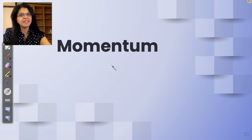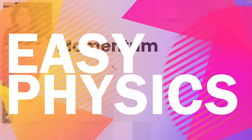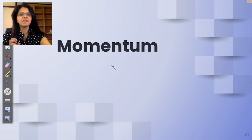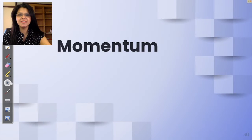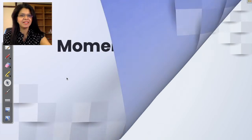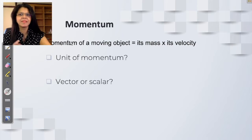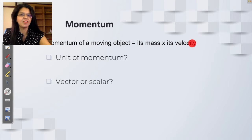Let us understand momentum — a slightly tricky but very interesting topic. The questions on it are very fun to solve. So let us start. What is momentum? It has a very simple formula: mass times velocity. The momentum of any moving object is its mass times its velocity.